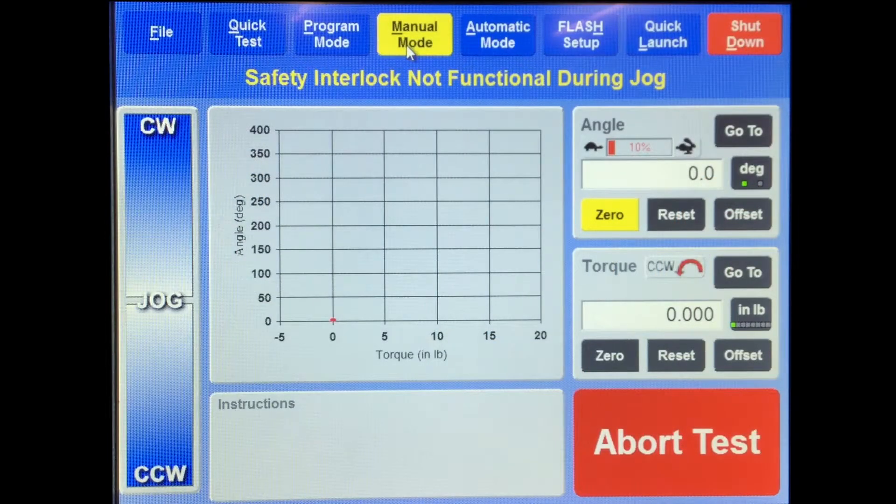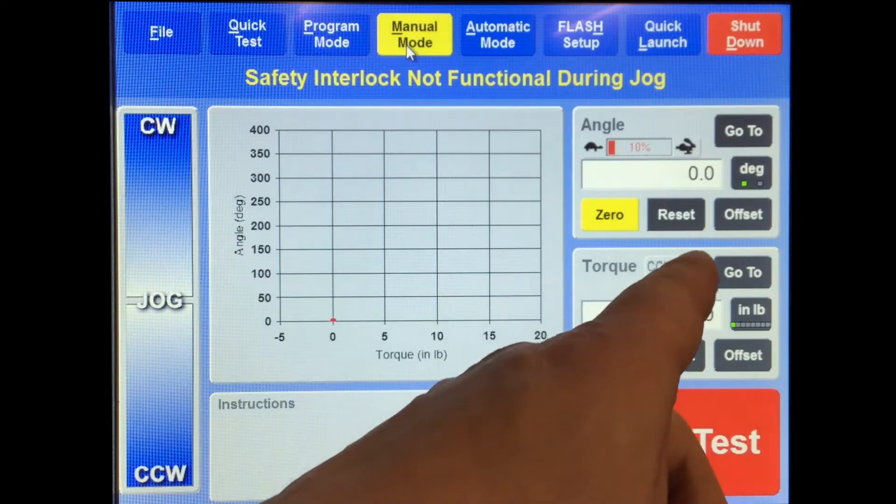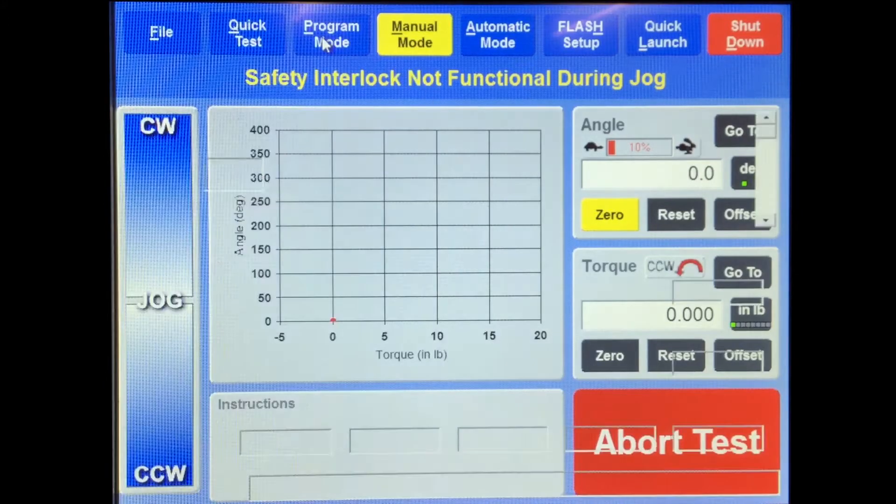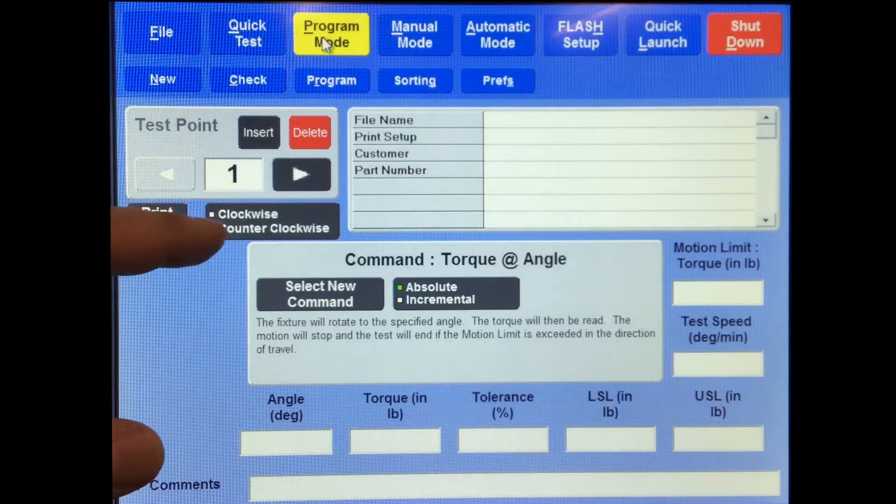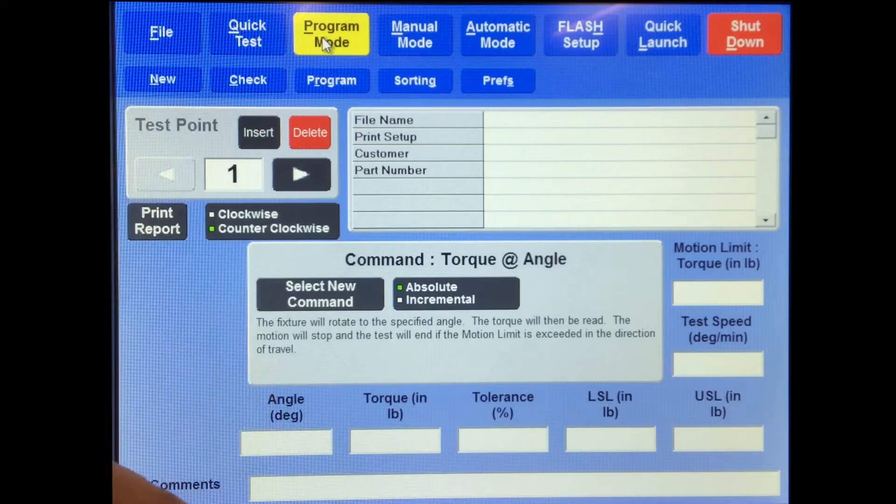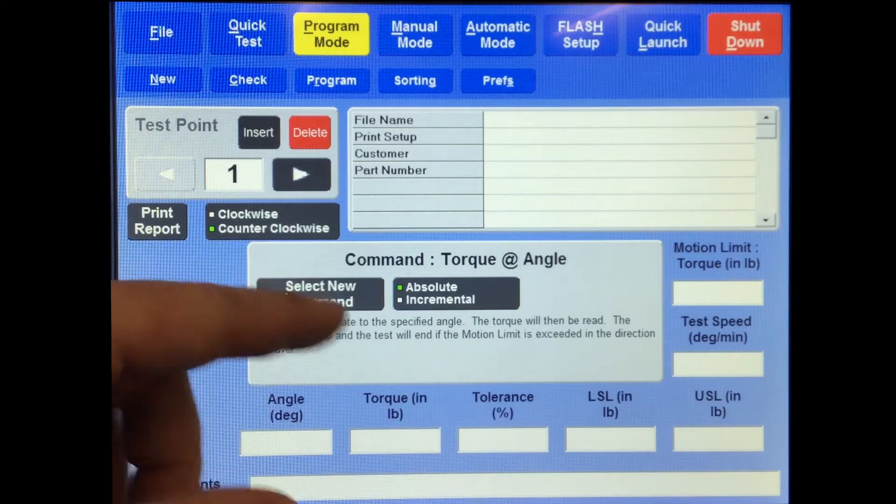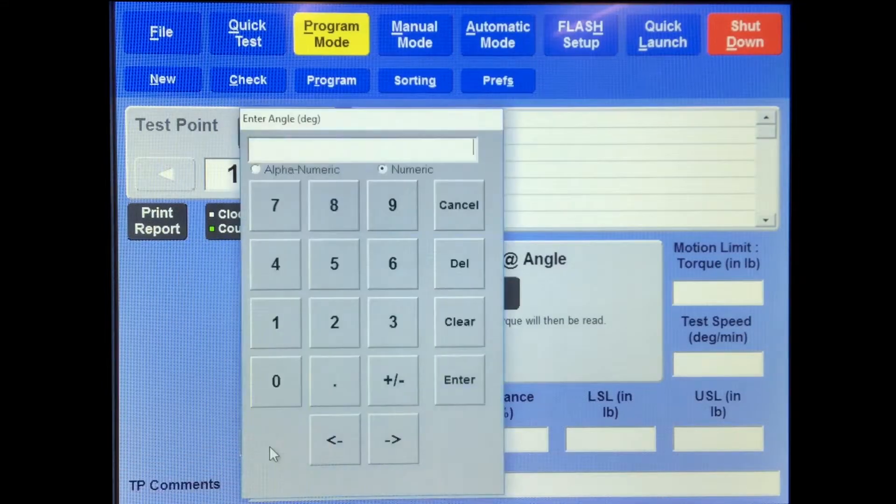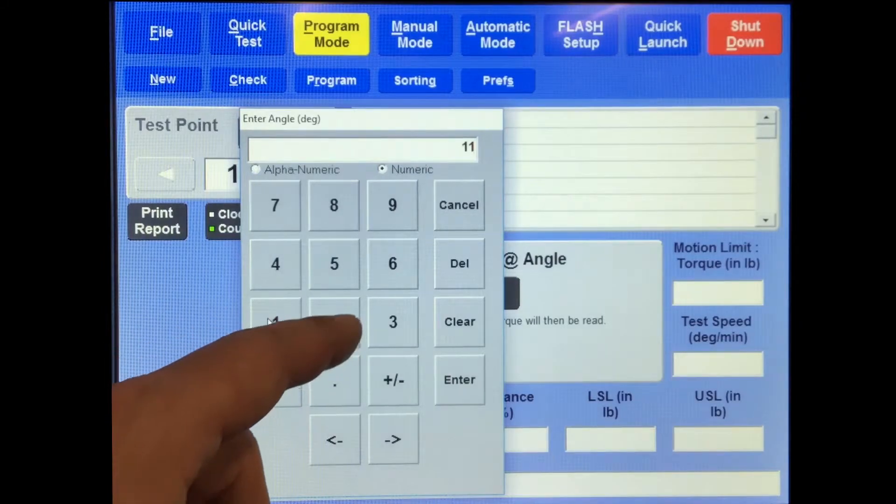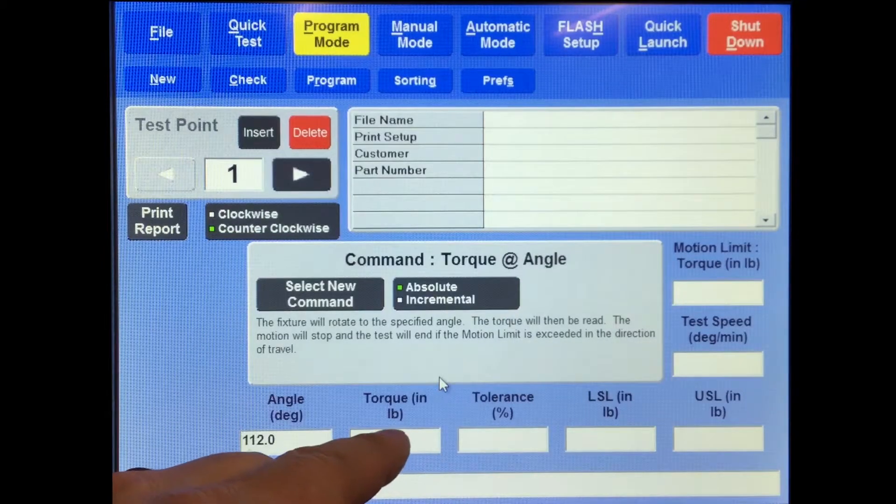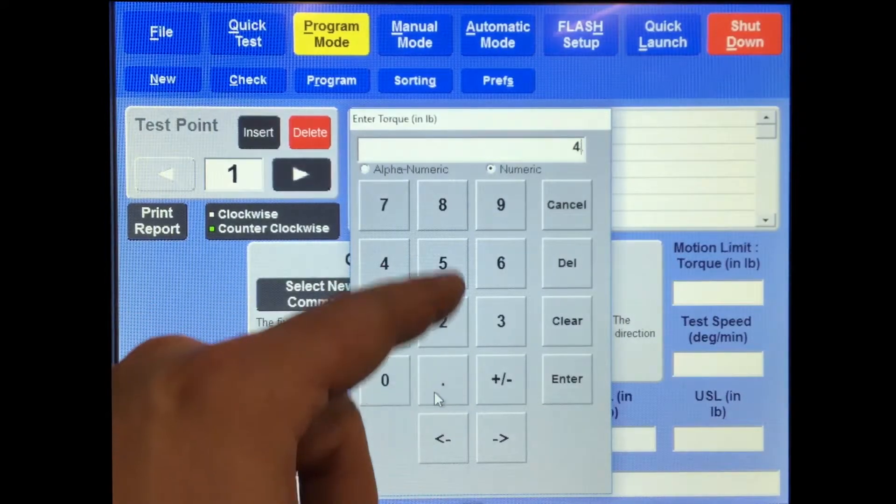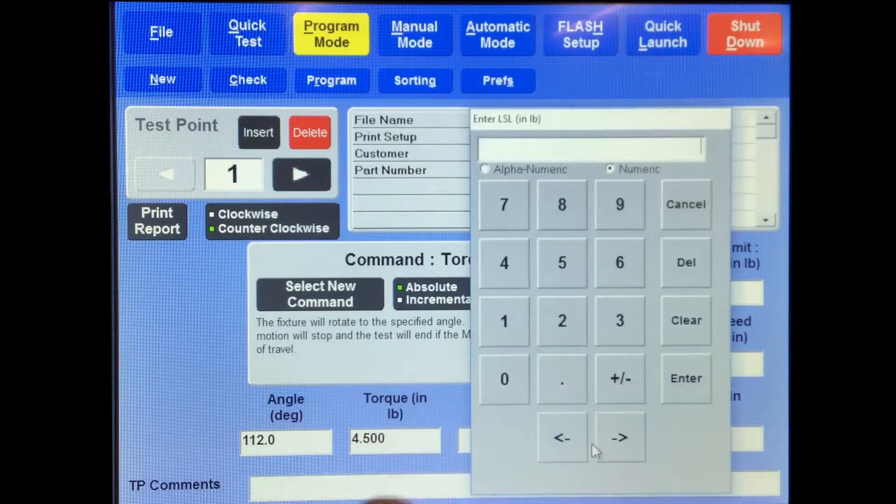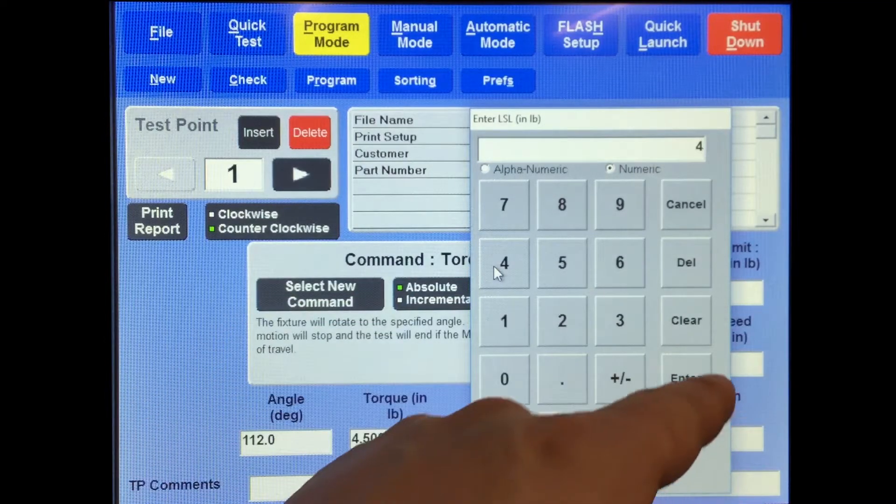So I'm going to set up a program. It's going to be done in counterclockwise, and I've already got that established, and I've got a zero angle which I like. Put a program mode, make sure that this is in counterclockwise or clockwise depending on your test. Select a new command and do torque at angle. For this particular test, I have to go to 112 degrees. The torque should be 4.5 inch pounds.